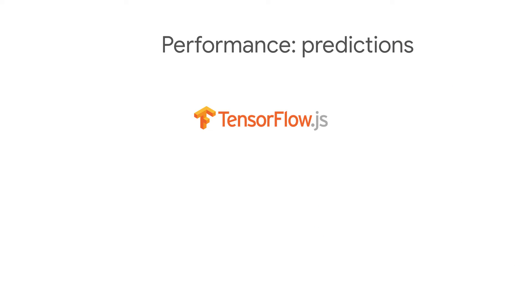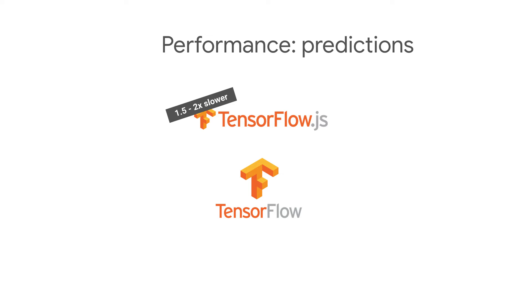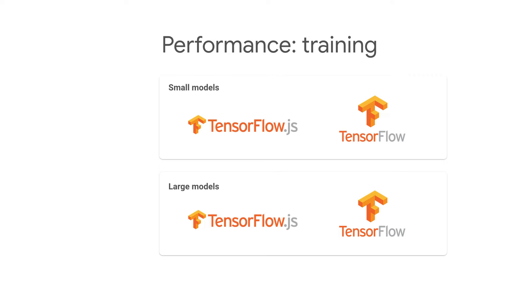Another big question around doing machine learning with JavaScript is performance. Anecdotally, for predictions, TensorFlow.js with WebGL is about 1½ to 2 times slower than TensorFlow using Python with AVX enabled. On the training side, we have seen large models train 10 or even 15 times slower in the browser compared with TensorFlow on Python.